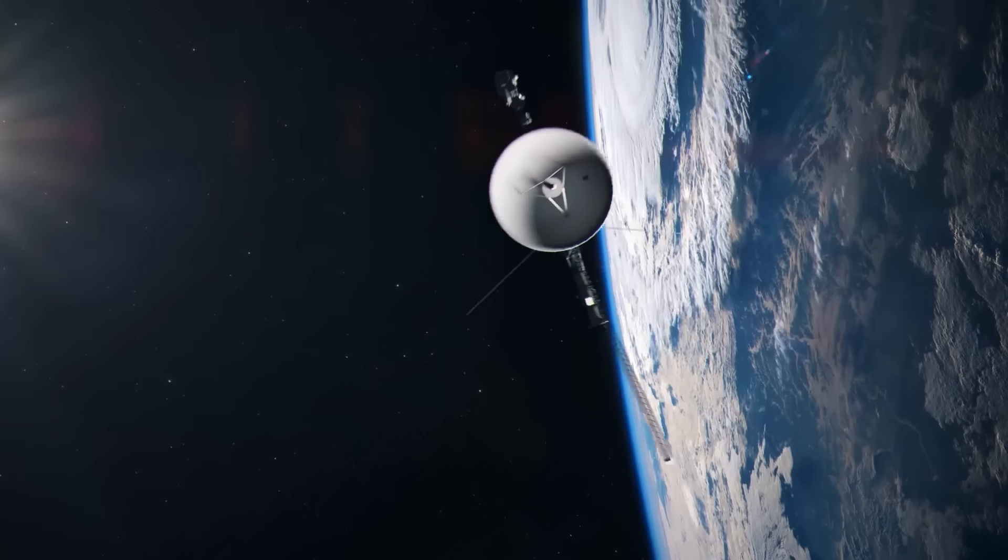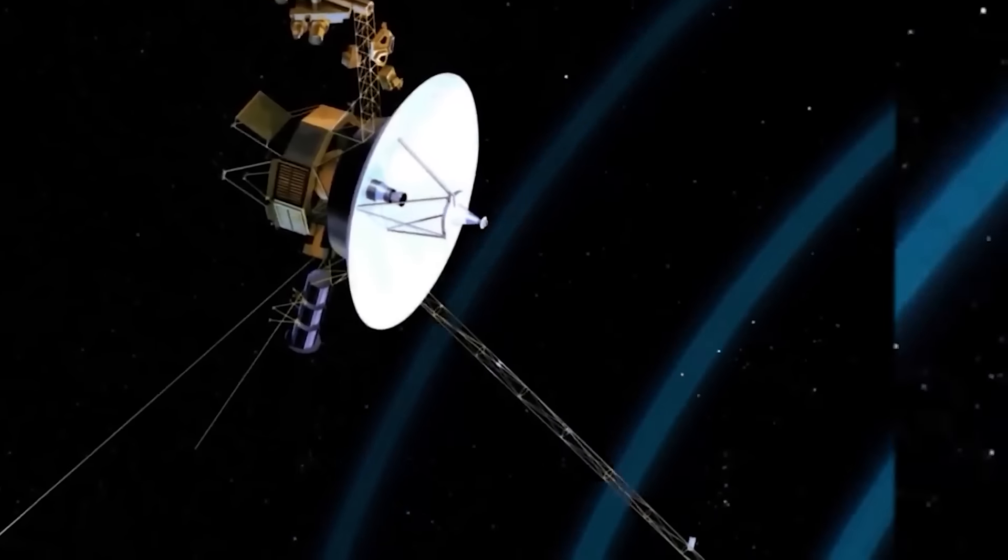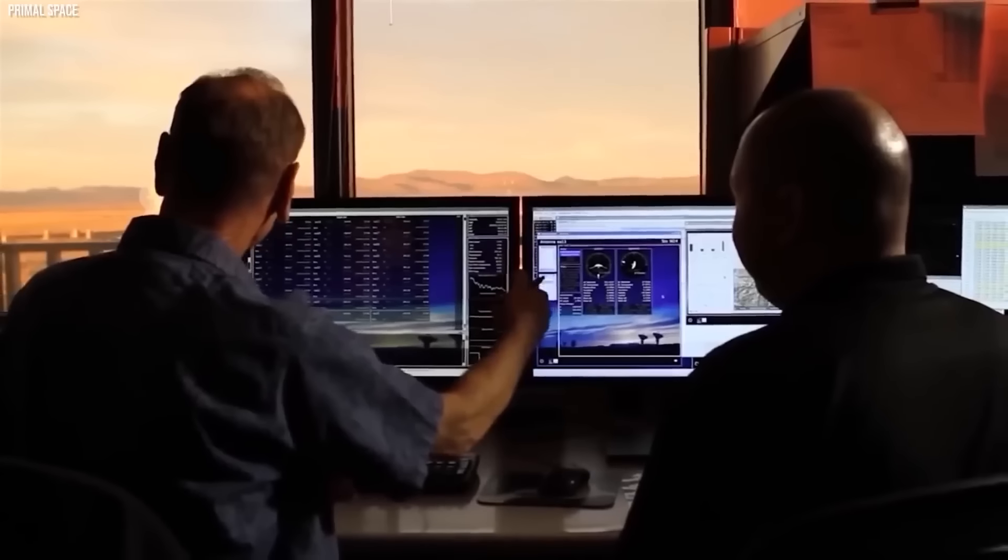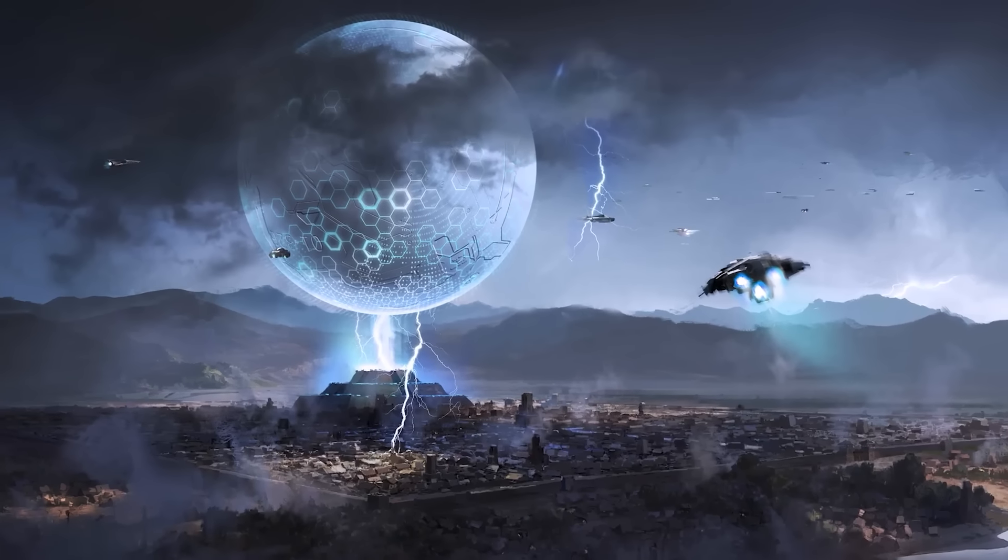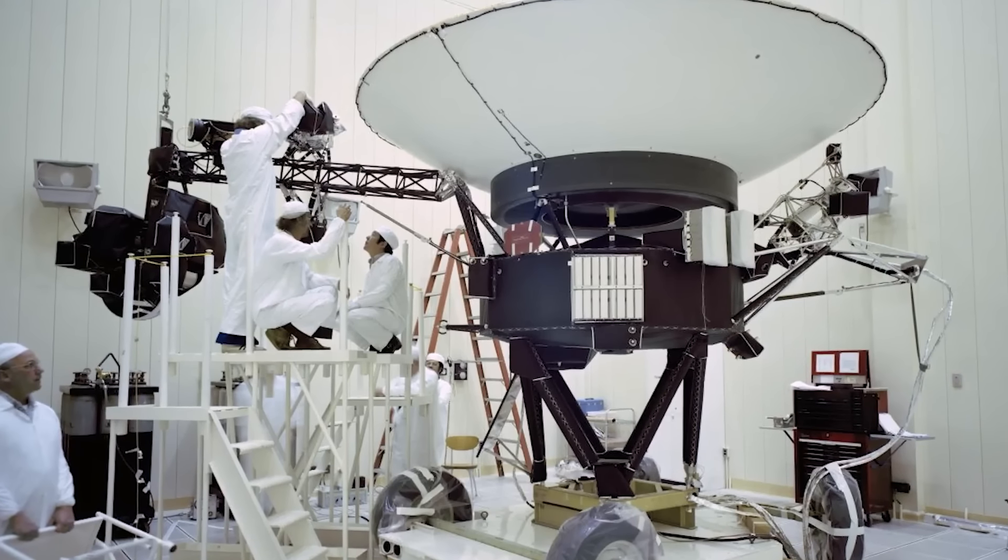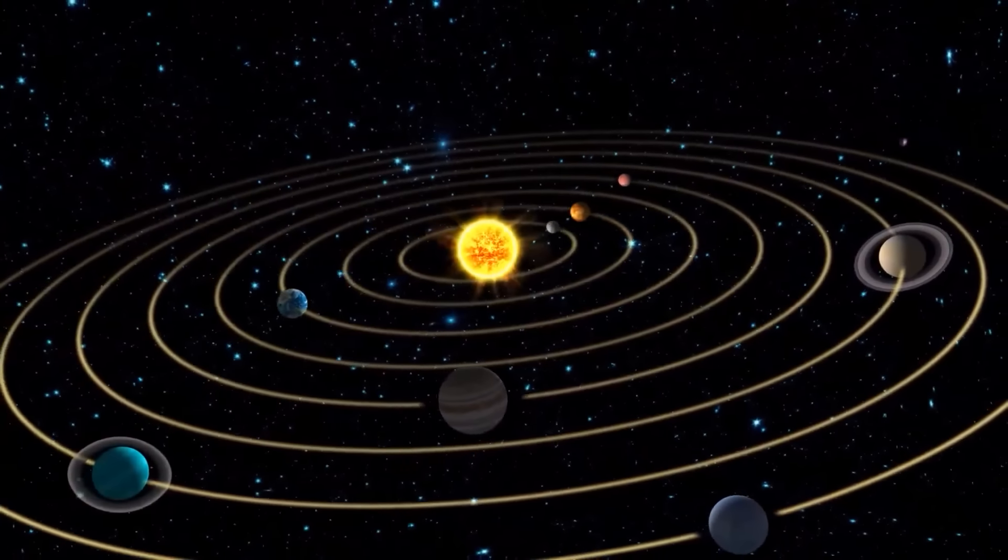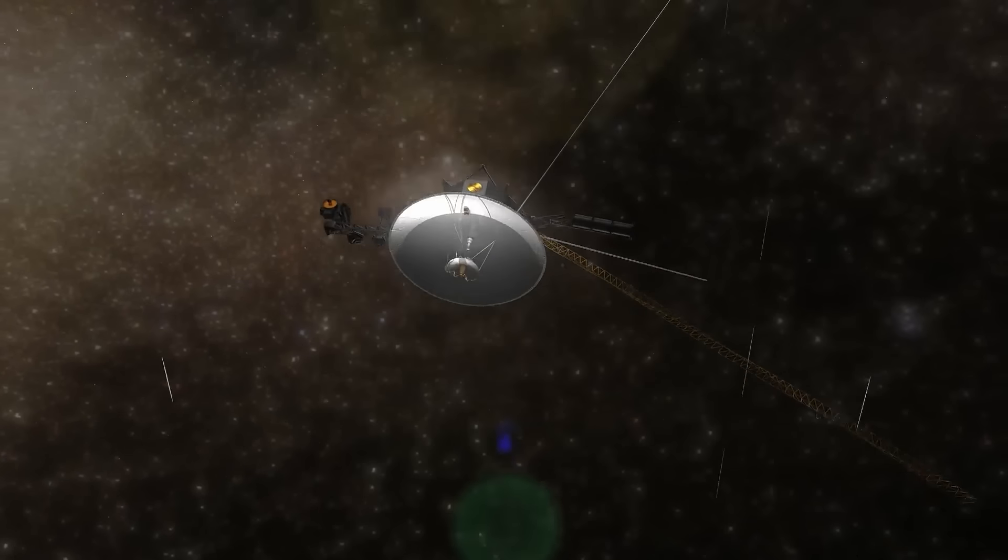But the Voyagers are more than just scientific instruments. They carry a golden record, a time capsule containing sounds, images, and music from Earth, intended as a message to any extraterrestrial civilizations that might discover them. The Voyager spacecraft, launched in 1977, are among the most remarkable engineering feats of their time. Their design and construction were carefully planned to ensure a long and productive mission through the solar system and beyond.